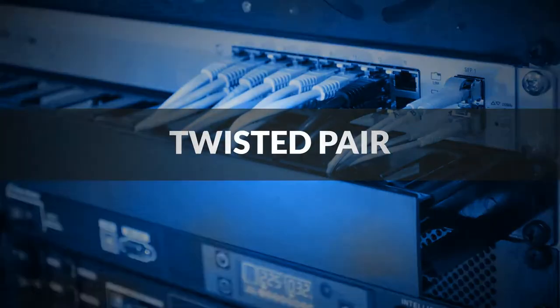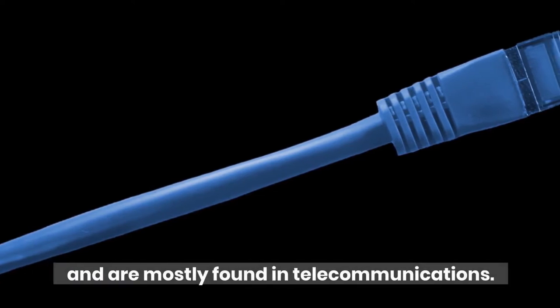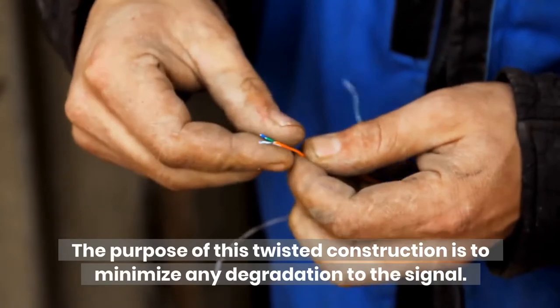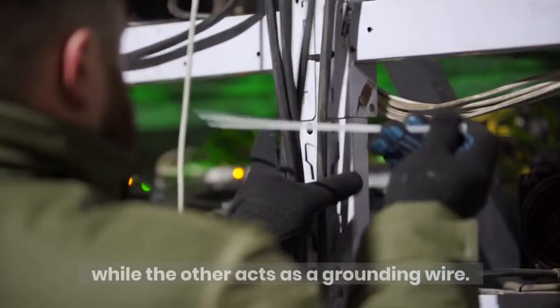Twisted pair. These data cables use a pair of twisted copper cores and are mostly found in telecommunications. The purpose of this twisted construction is to minimize any degradation to the signal. One of the twisted cores is used to transmit information while the other acts as a grounding wire.